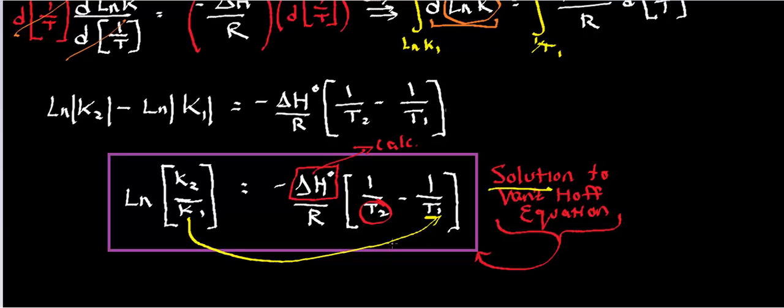Gas constant's known. The temperature of the equilibrium constant that you have should be known. You can pick any temperature for t2 that you want, and you more or less just solve for the second equilibrium constant. Now, here I've done a little logarithm rule where, since it's natural log of k2 minus ln of k1, I've grouped these into one natural log where you have k2 over k1.